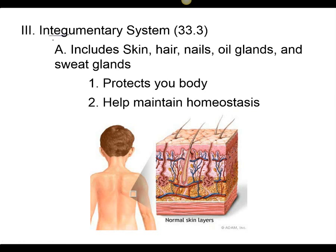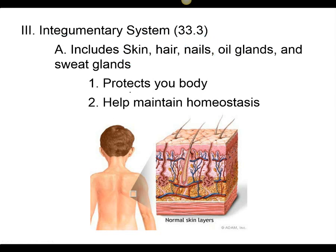Skin is known as the integumentary system. It includes our skin, our hair, and our nails. Within our skin, we have oil glands known as the sebaceous glands and sweat glands. The main function of the skin is more like the immune system — it protects our body by providing a layer between us and the outside world. It also helps regulate salt balance, eliminate wastes, and control body temperature, maintaining homeostasis.